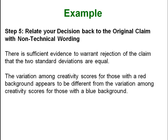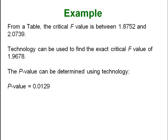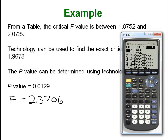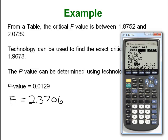Now let's run this with technology. On the calculator, go to the STAT TESTS menu and scroll to the bottom to find the two-sample F test. Select that, then choose Statistics since we have summary data rather than raw data. Remember to make S₁ the larger of the two: enter 0.97 with N₁ of 35, and 0.63 with N₂ of 36. Set the alternative to not-equal, choose Calculate, and you get the same F value of 2.3706 and a p-value of 0.0129.